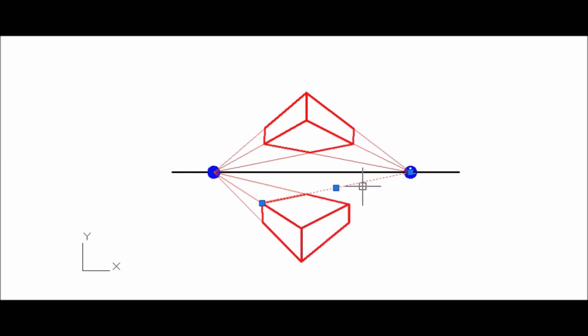Therefore, here we have got our second cube using the same process. Now you can notice here the cube in the horizon line has its top face visible, while on the other hand the cube above the horizon line has its bottom face visible.